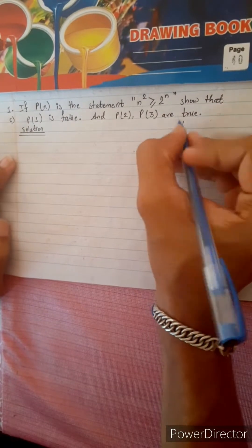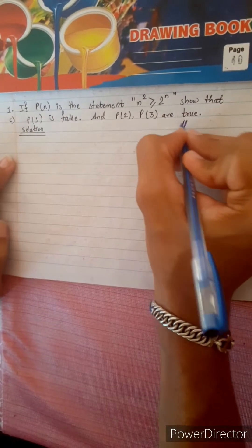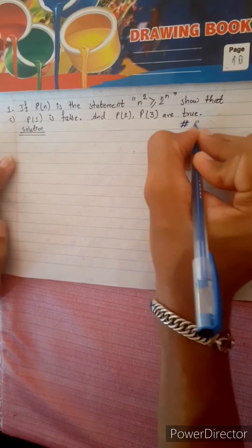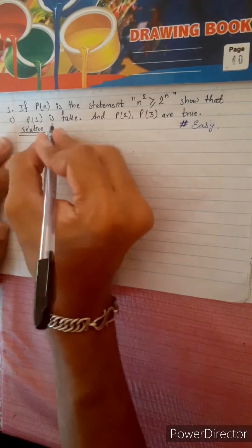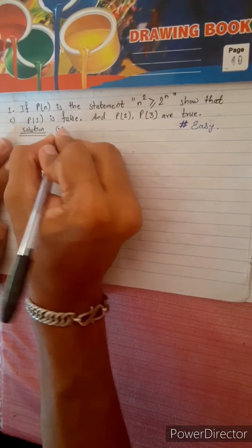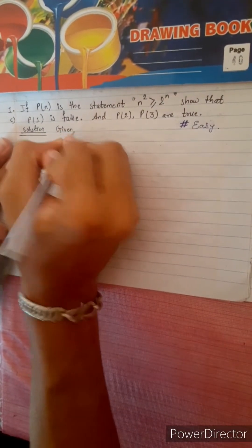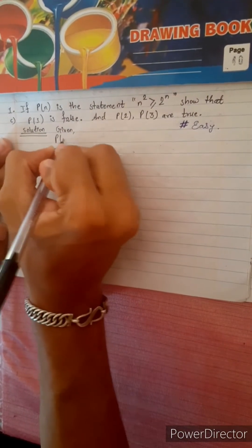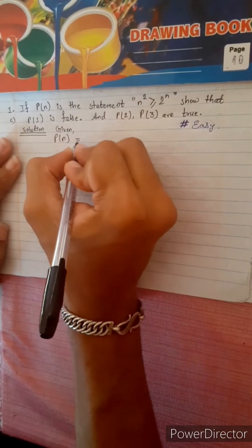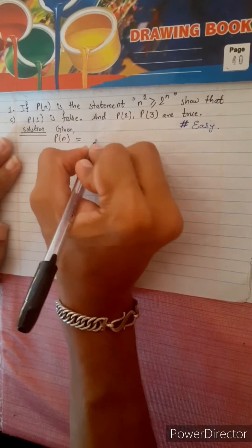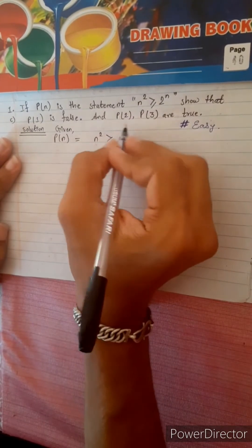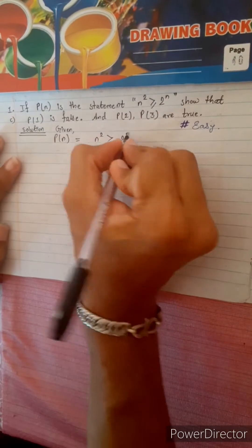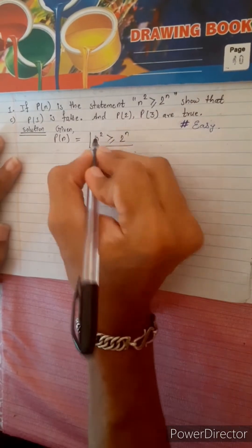Hello everyone. I am going to use a hashtag. This is given P(n): n squared is greater than or equal to 2 power n. This is the statement.